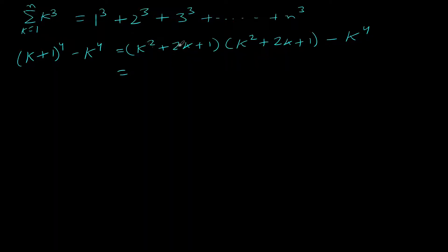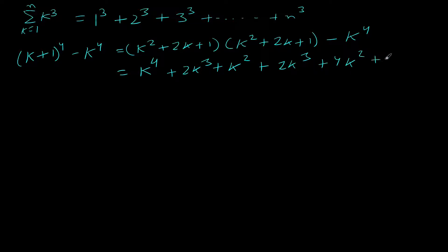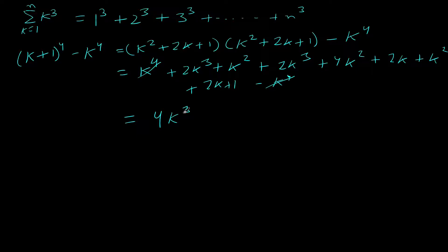Now if we try to solve this, k square times k square is k to the power 4. We get 2k cube plus k square plus k square, and again 2k cube plus 4k square plus 2k, and then k square plus 2k plus 1, and here we have minus k to the power 4, so that cancels. Adding all the cubes: 2k cube plus 2k cube equals 4k cube. Adding all the squares: 4, 5, and 6, giving 6k square. Adding all the k's: 2k plus 2k is 4k, and we get plus 1.